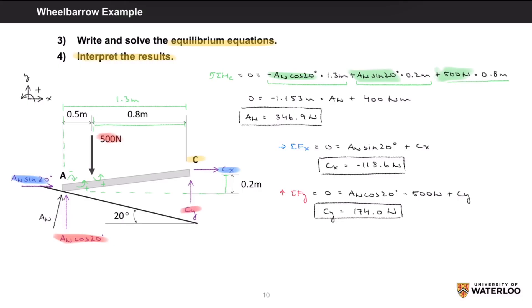Interpreting our results, we can say that the force at C is a vector with an x component of negative 118.6 newtons and a y component of 174 newtons.